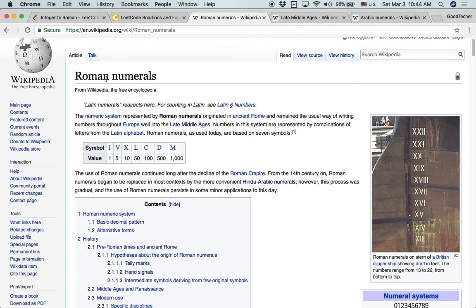So Roman numerals, looking at this Wikipedia page, the numerical system represented by Roman numerals originated in ancient Rome and remained the usual way of writing numbers throughout Europe well into the late Middle Ages. So just as the name indicates, the Roman numerals were originally developed in ancient Rome.